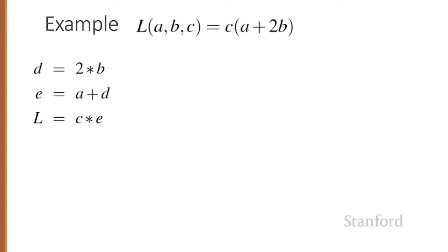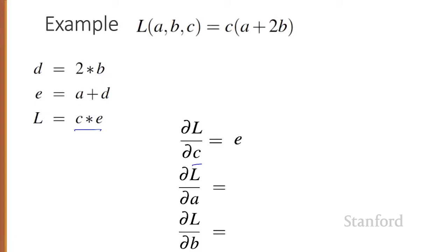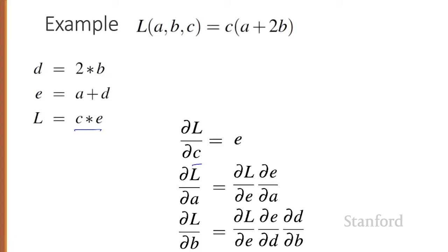Using the chain rule to compute the needed derivatives: since in the computation graph L equals C times E, we can directly compute that the partial derivative of L with respect to C is simply E. For the other two, we'll need the chain rule. The derivative of L with respect to A is the derivative of L with respect to E times the derivative of E with respect to A. Similarly, the derivative of L with respect to B is the derivative of L with respect to E, times E with respect to D, times D with respect to B.